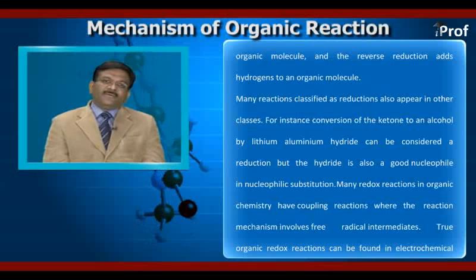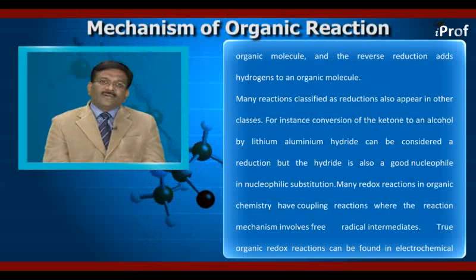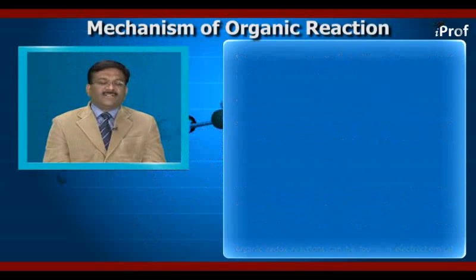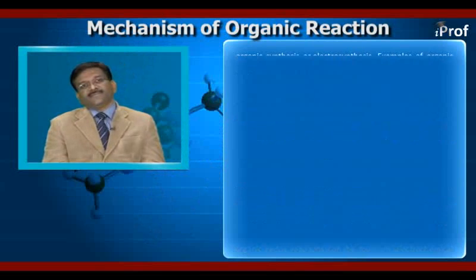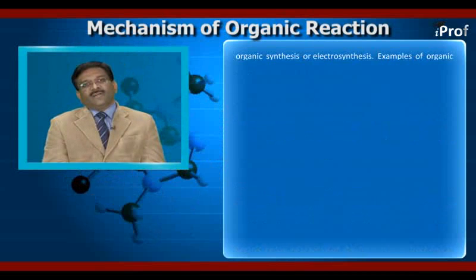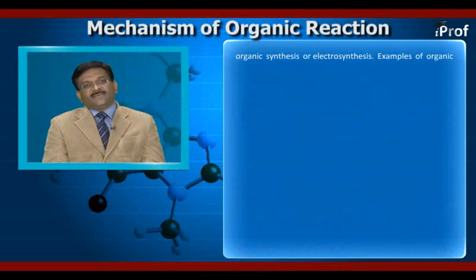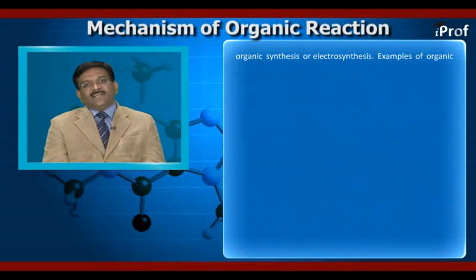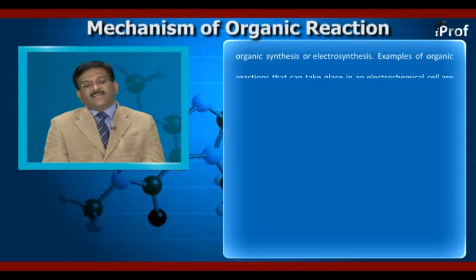Many redox reactions in organic chemistry involve coupling reactions where the reaction mechanism involves free radical intermediates. Two organic redox reactions can be found in electrochemical organic synthesis, or electrosynthesis. Examples of organic reactions that can take place in an electrochemical cell include the Kolbe electrolysis.